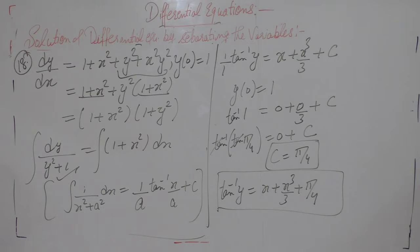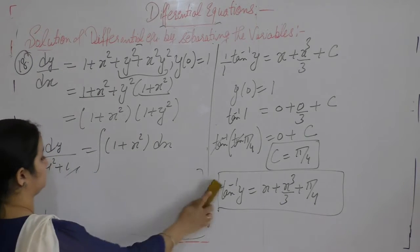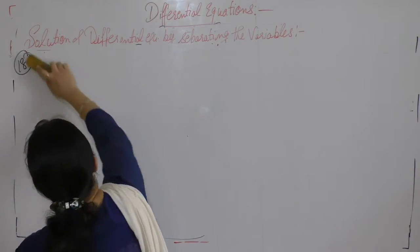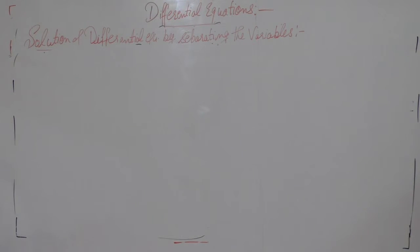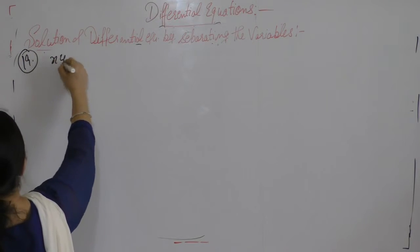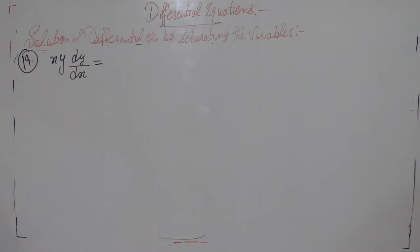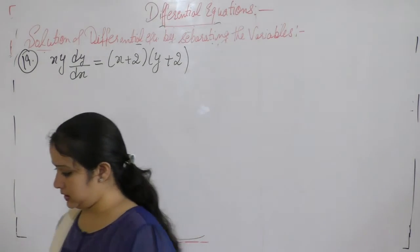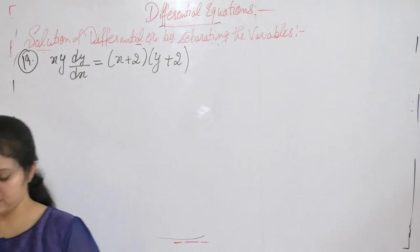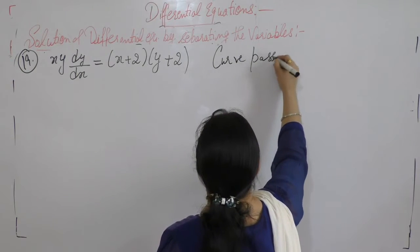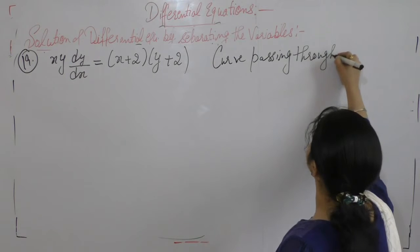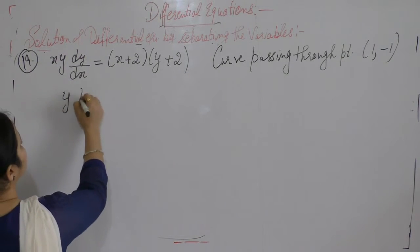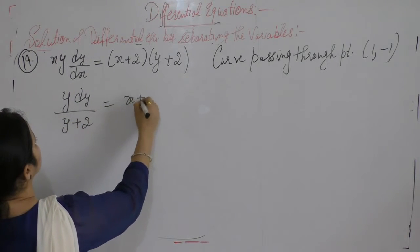Now the next one: question number 19 — for the differential equation xy·dy/dx = x + 2y, find the solution curve passing through the point (1, −1). Separating the terms: y dy/(y + 2) = (x + 2)/x dx.